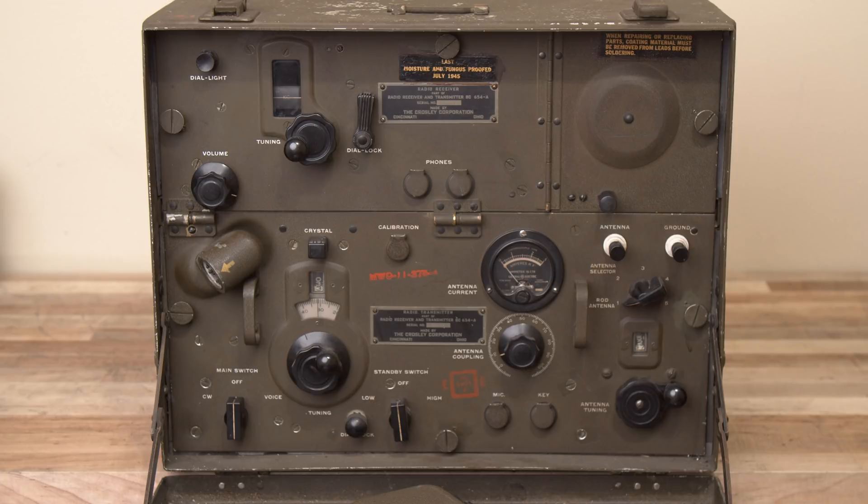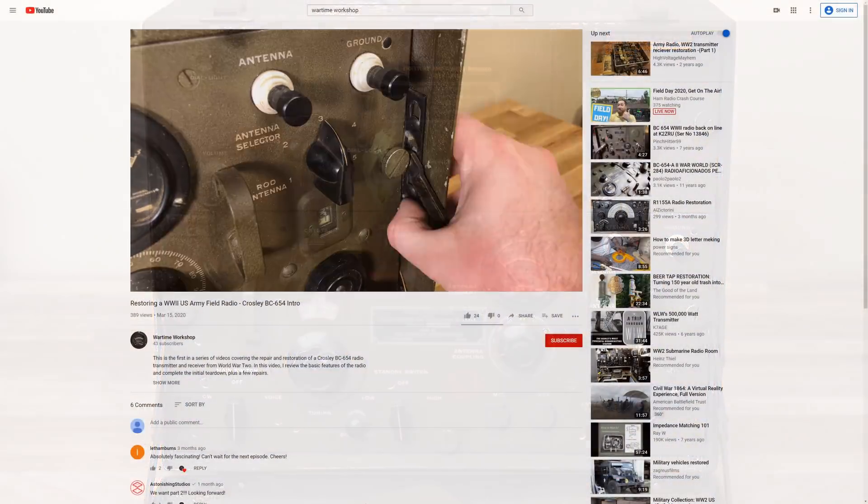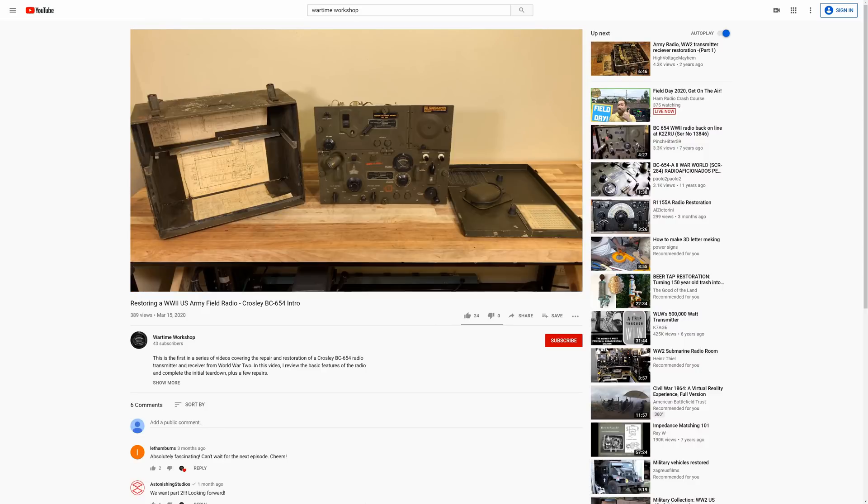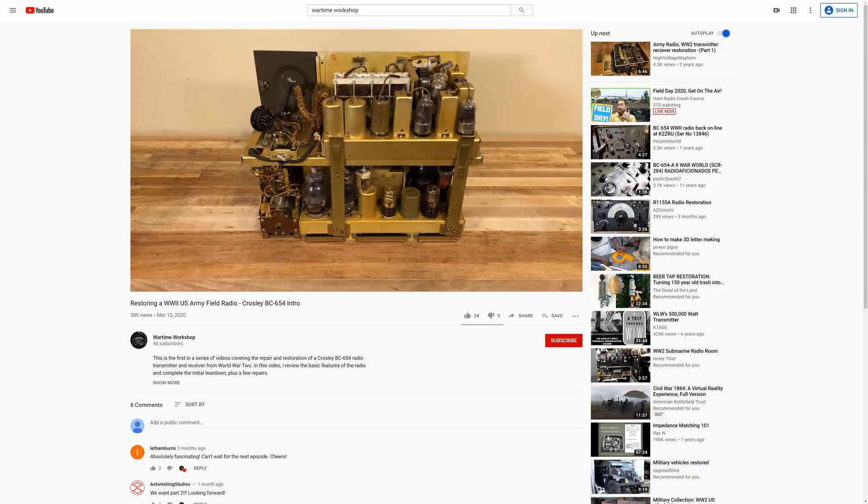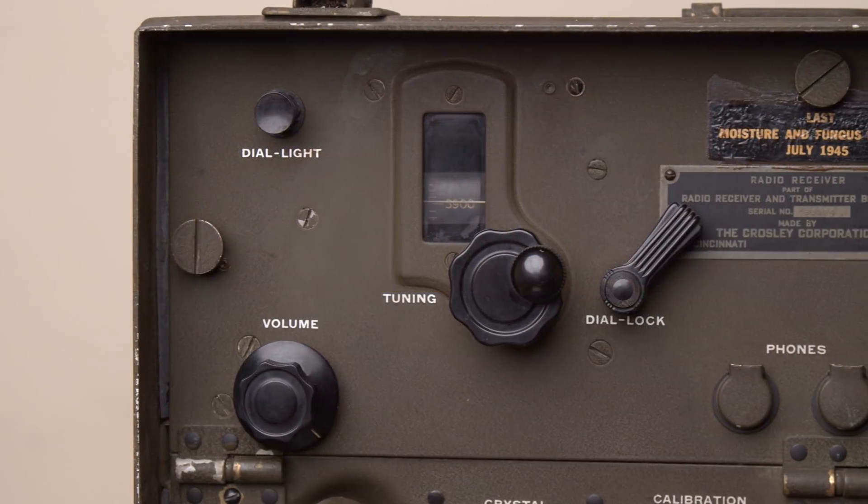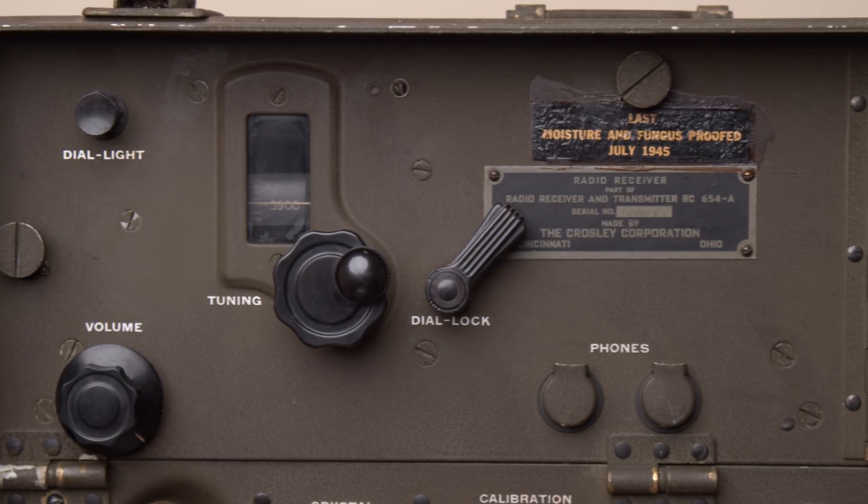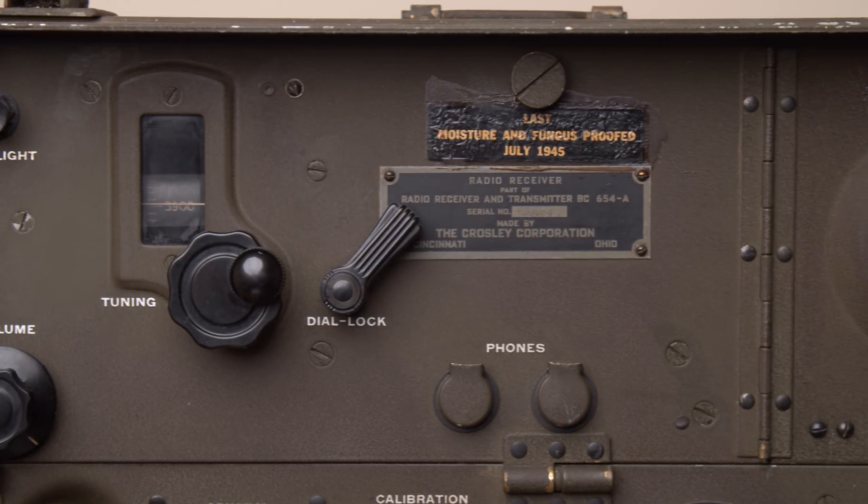This video is part two of a series documenting the restoration of the BC-654, so if you haven't seen part one, be sure to check it out. In that video, I shared some of the history of this radio and a tour of my personal BC-654. Today, my goal is to restore the receiver section of this historic device to operating condition.